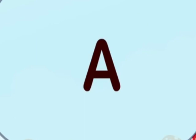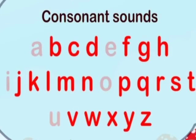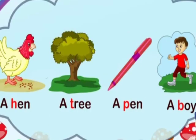Here is the explanation. We use A if the naming words begin with consonant sounds. What are consonants, children? There are 26 letters in the English alphabet. The letters A, E, I, O, U are vowels and the rest are consonants. For example: a hen, a tree, a pen, a boy. Hen, tree, pen, boy begin with a consonant. That's why we used A.